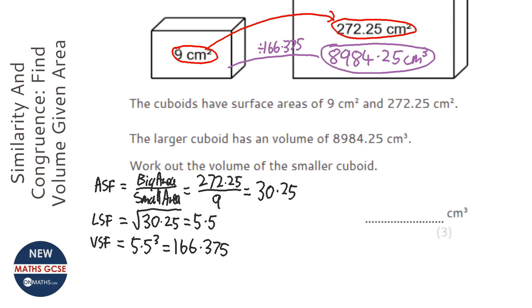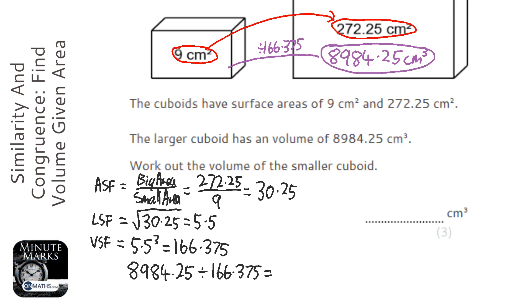So we're going to do 8984.25 divided by the volume scale factor, which is 166.375, and it gives me the answer of 54.